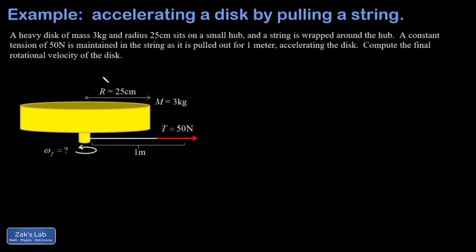In this problem, we're computing the final velocity of a disk, and the disk is sitting on a tiny hub with string wrapped around it. We're not even given the radius of that hub because we don't need it in this problem. We're going to pull on that string for exactly one meter, maintaining precisely 50 newtons of tension in the string.